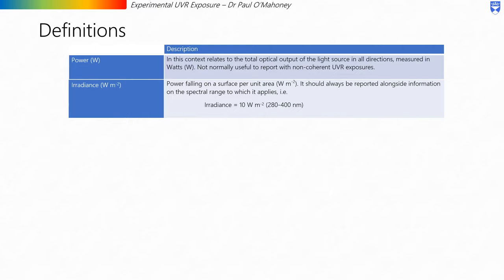Instead, we most often use irradiance, which is the power falling on a surface per unit area, measured in watts per meter squared. It should always be reported alongside information on the spectral range to which it applies. For example, irradiance equals 10 watts per meter squared in the range of 280 to 400 nanometers, which gives that measurement a bit more context.